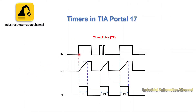Let's look at the diagram of this timer. If I press start, the output will be immediately turned on and elapsed time starts counting. As soon as the elapsed time reaches the preset time, the output will turn off, even if the input is still on. Whenever I turn off the start, the elapsed time resets to zero. Also, if I turn off the input before the preset time, the elapsed time will still count — turning the input on and off again does not affect the output.